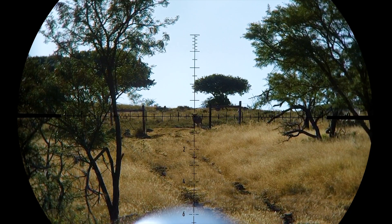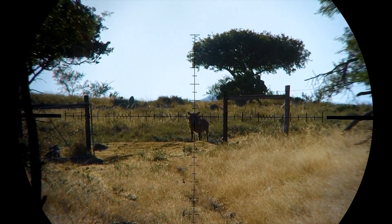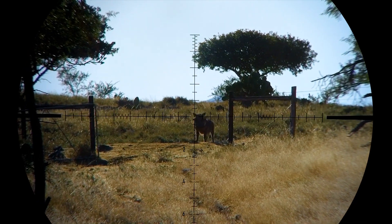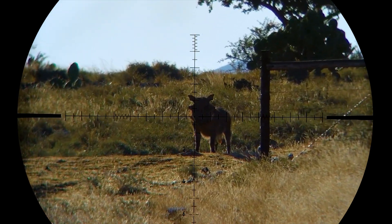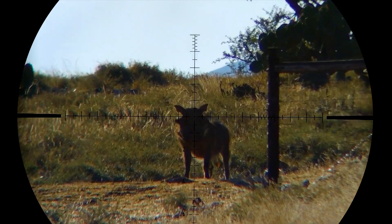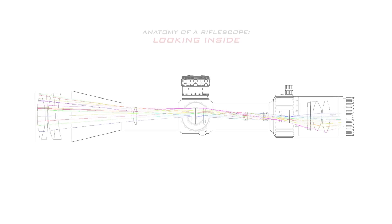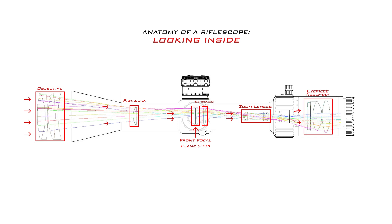As we all know, a riflescope's primary purpose is to magnify an image. It's the main reason riflescopes were invented in the first place, and if you don't need to magnify an image you're probably better off with iron sights or a reflex sight. When you look through a riflescope, the light is gathered by the objective lens and focused onto the front focal plane before traveling through various lenses inside the erector system and then through an eyepiece into your eye.